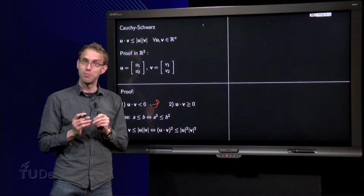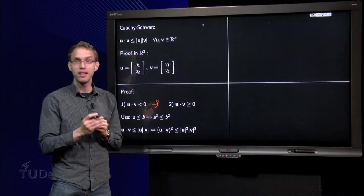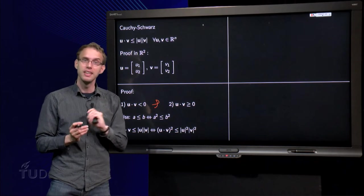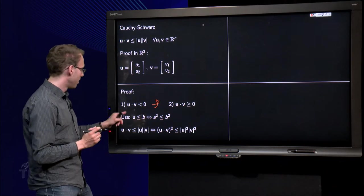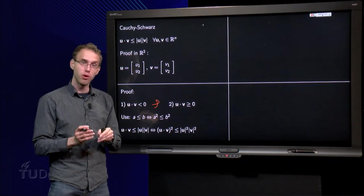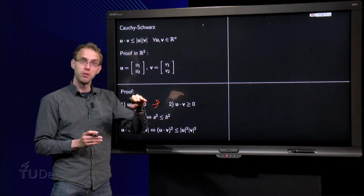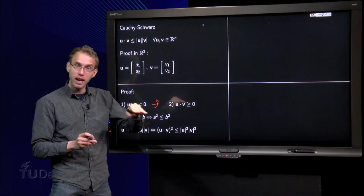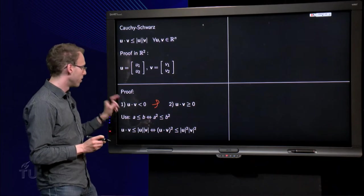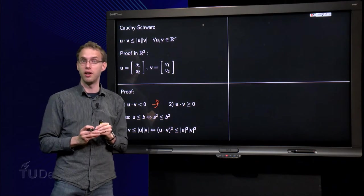But what now if the inner product is positive, so bigger or equal than 0? Then we can use the following trick. We know that if a is smaller or equal than b, then a² is smaller or equal than b². Because the parabola is an increasing function for the positive values a and b.